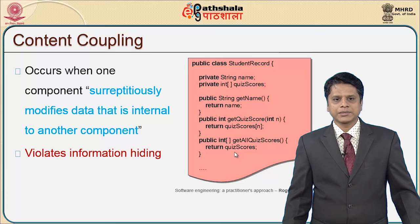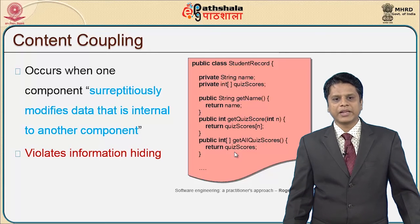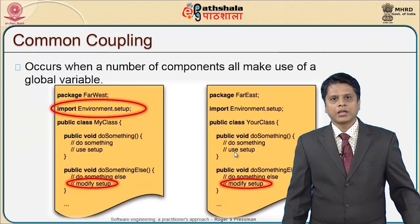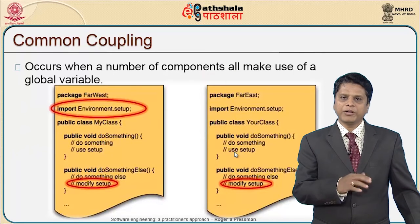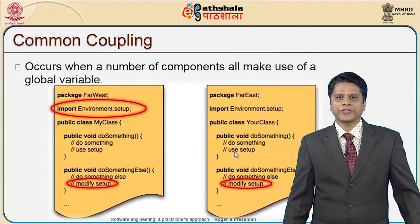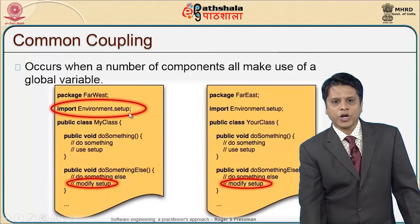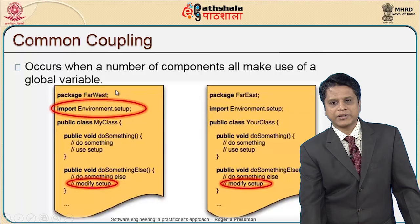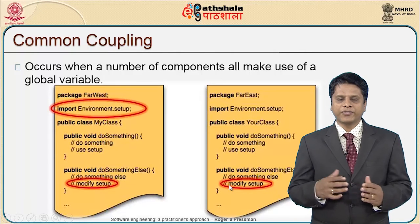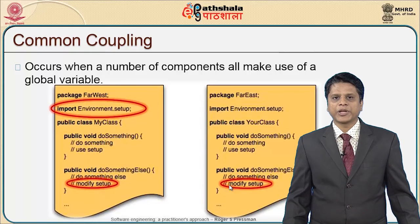Content coupling occurs when one component surreptitiously modifies data that is internal to another component, violating information hiding — this must be completely avoided. Common coupling occurs when a number of components all make use of a global variable. For example, if I import environment.setup and modify it in one package, and also import and modify the same package in another — when at two different instances I am importing the same environment.setup and modifying it, this becomes common coupling.